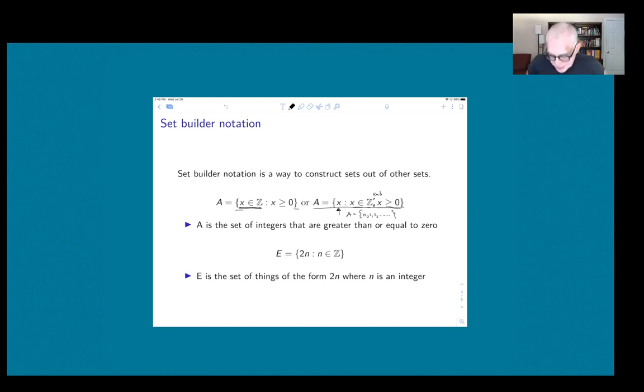Here's another example of a set that's written in set builder notation, and it's a little bit different. The way to read this is it's the set of things of the form 2n where n is an integer. So what does that mean? Well, it means that something is in E if it's equal to 2 times n where n is an integer.